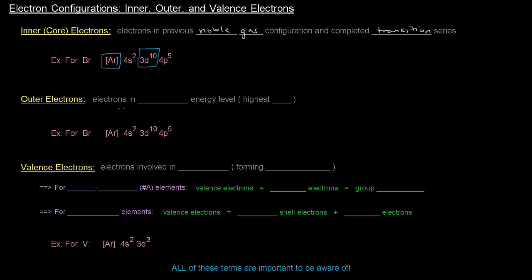Now, outer electrons are the electrons in the highest energy level, specifically the highest n value, right? Because n gives you the energy level.